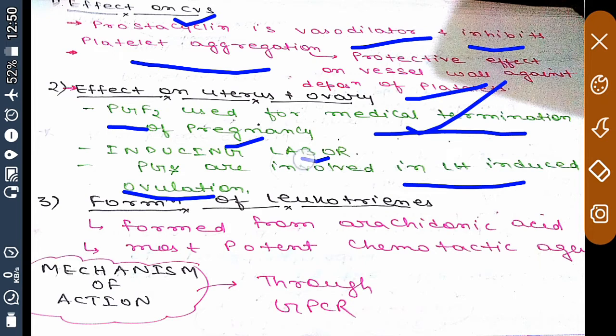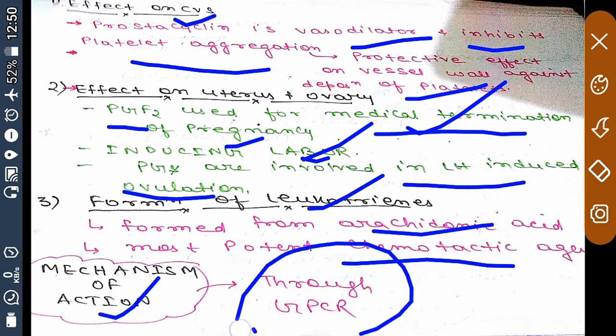Prostaglandins also lead to the formation of leukotrienes, which are formed from arachidonic acid. Leukotrienes are the most important chemotactic agents. The mechanism of action of prostaglandin is through GPCR (G-protein coupled receptor). This was the rapid revision, thank you.